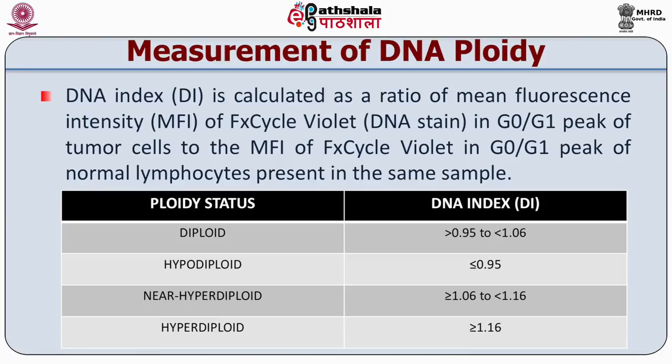Measurement of cellular DNA content by flow cytometry uses fluorescent dyes that intercalate into the DNA helical structure. The fluorescent signal is directly proportional to the amount of DNA in the nucleus and can identify gross gains or losses in DNA. Abnormal DNA content, known as DNA content aneuploidy, can be determined in tumor cell populations. The ploidy status is indicated by the DNA index, calculated as the ratio of mean fluorescent intensity (MFI) of the tumor cells to the MFI of normal lymphocytes.